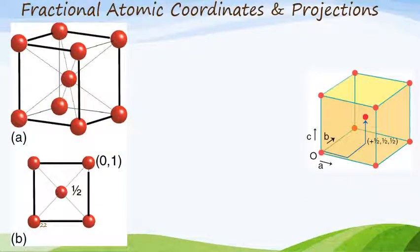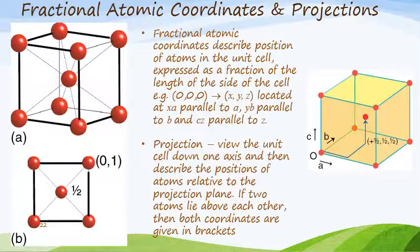This is the fourth part of the material we're working through. This section covers fractional atomic coordinates and projections. Fractional atomic coordinates describe the position of atoms in the unit cell, and are generally expressed as a fraction of the length of the side of the unit cell. For example, we can have an atom positioned at the origin at position zero, zero, zero. We are used to using a Cartesian set of coordinates which is X, Y, and Z.